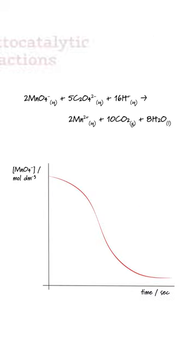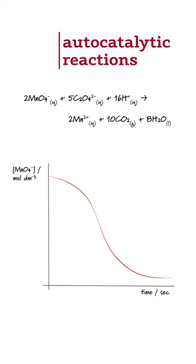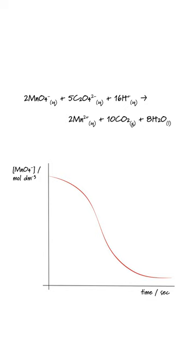But when manganate-7 ions oxidize ethane-dioate ions, the graph is a sigmoid curve. The rate of the reaction actually increases with time during the first half of the reaction.